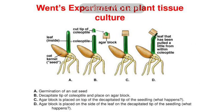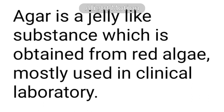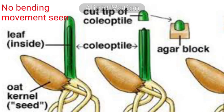What he did was, he took the coleoptile of Avena and decapitated it — he removed its tip — and placed it on an agar block. Agar is a jelly-like substance obtained from red algae, mostly used in clinical laboratories. After decapitation, the Avena shoot did not show any bending movement.